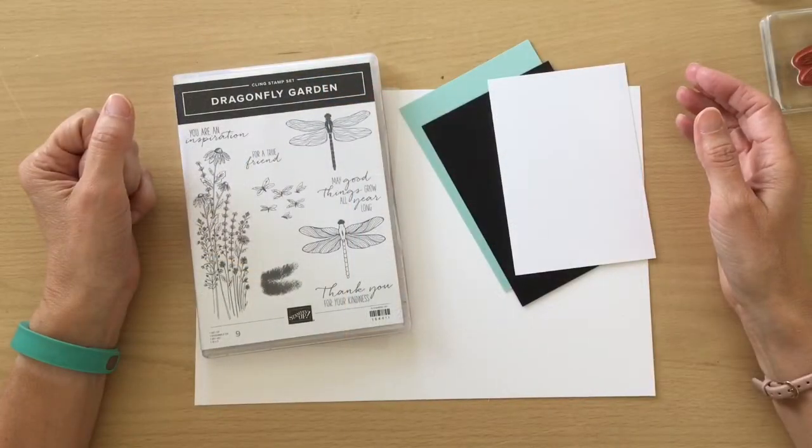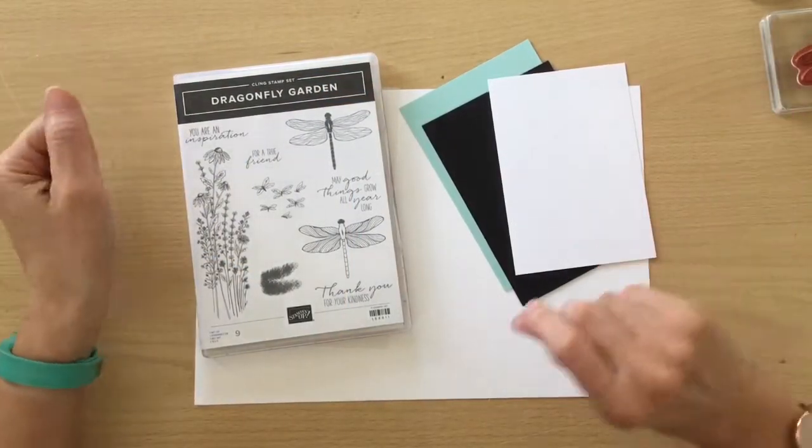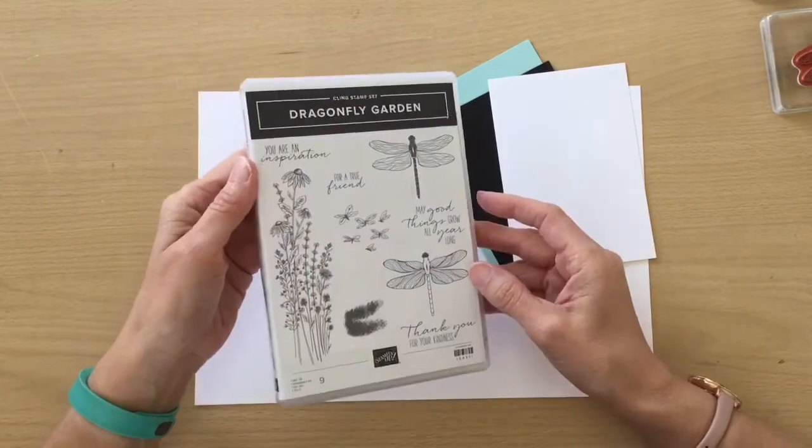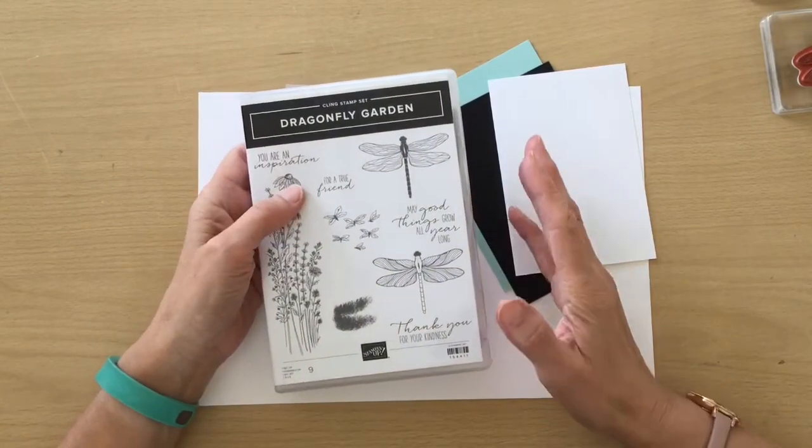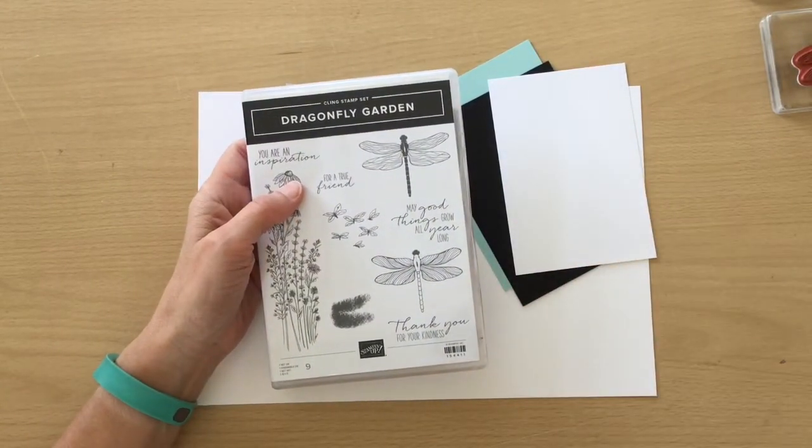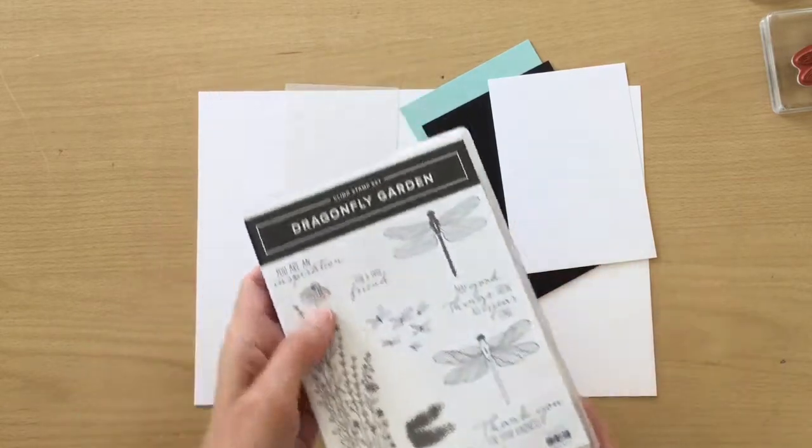Hello my name is Linda. I'm a UK independent Stampin' Up demonstrator. I'm making a card today using the Dragonfly Garden and I'm also going to be using the gilded leafing as well.